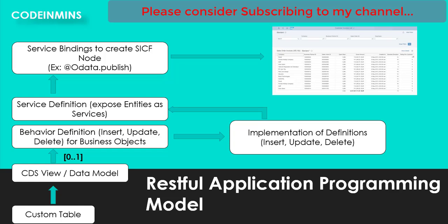On top of the business object, we create the behavior definition, which contains insert, delete, and update operations. We also have the behavior implementation — if you have insert, delete, and update methods, you need to implement them and write code inside them. Once the implementation is done, we create a service definition, which takes the CDS views and exposes them as an OData service so those entities are accessible via a URL.